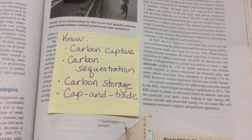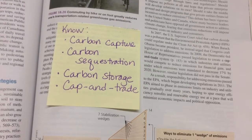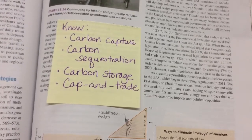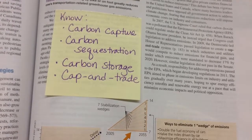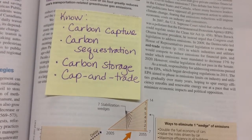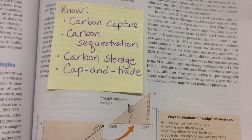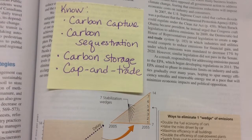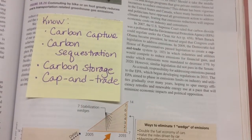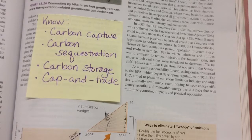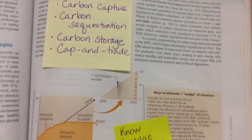Carbon sequestration is planting forests and things to try to remove the carbon in the atmosphere. Carbon storage is also storing the carbon underground. Cap and trade we went over previously in another chapter — I think it's either six or seven — so make sure you know that.